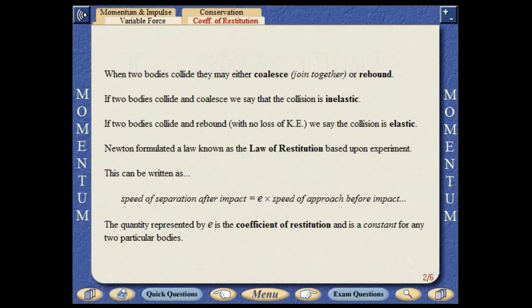When two bodies collide, they may either coalesce or rebound. If two bodies collide and coalesce, we say that the collision is inelastic. If two bodies collide and rebound, we say that the collision is elastic. Newton formulated a law known as the law of restitution, based upon experiment.